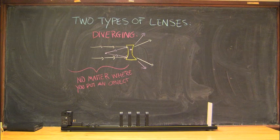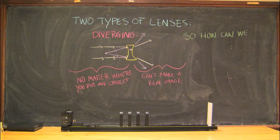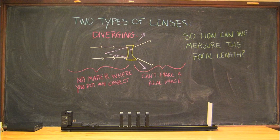So no matter where you put a light source on one side of a diverging lens, you can't create a real image on the other side. This makes it difficult to measure the focal point of a diverging lens.